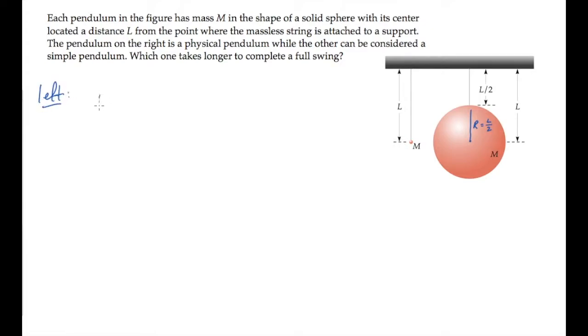The pendulum on the left is a simple pendulum, so its period is 2 pi times the square root of l over g.